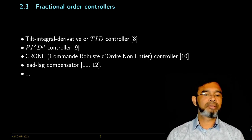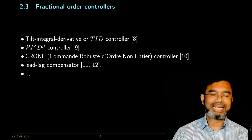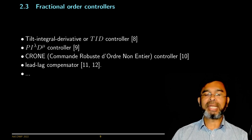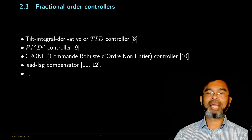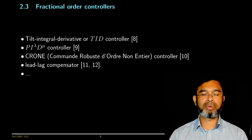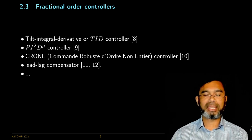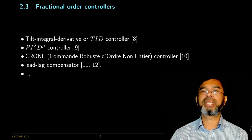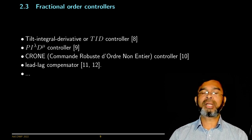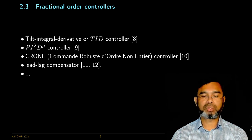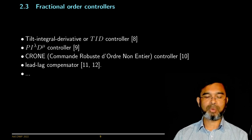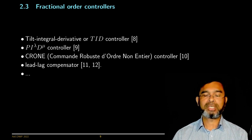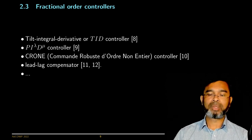In the literature, we see different fractional order controllers available. The first one is the tilt integral derivative or TID controller, which is an early design patented in 1994 by someone from NASA. There are other controllers called PI^λ D^μ, which simply means there is a proportional component, the integral component is of fractional order λ rather than integer order, and similarly the derivative component has fractional order μ. There is also the Crone controller, which has been developed since the 1990s, lead-lag compensators, and many other controllers designed using techniques such as genetic algorithms and particle swarm optimization.